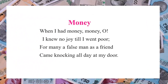Let us begin with the poem 'Money.' We all know that money can buy all the necessities and luxuries of life, and we believe money brings happiness. But the writer says: 'When I had money, money O!' — expressing sadness. He says he knew no joy until he went poor. For many a false man came as a friend, knocking at his door all day long.